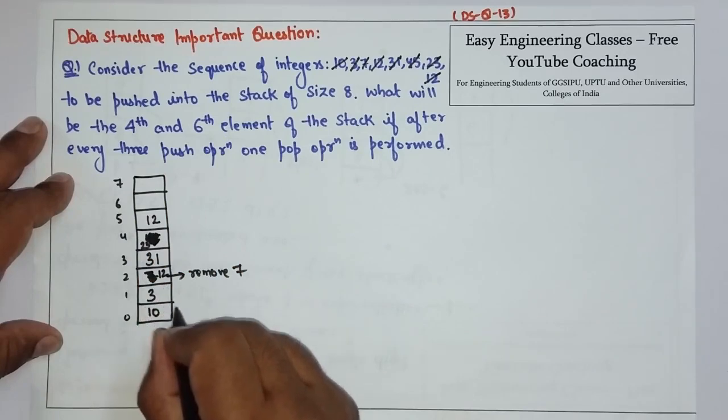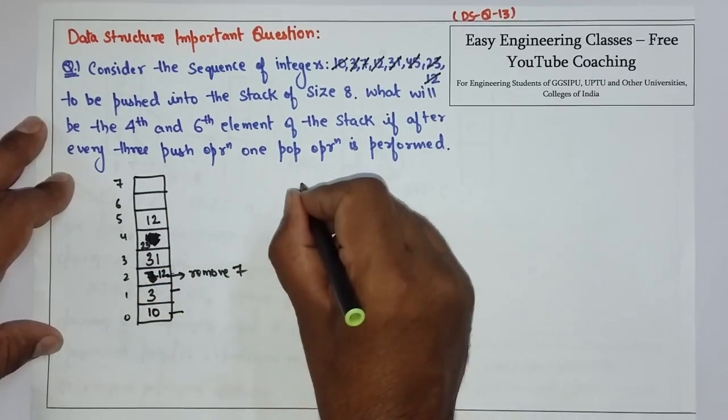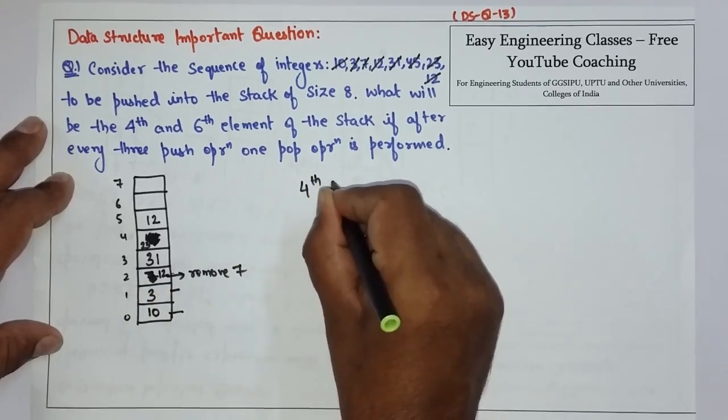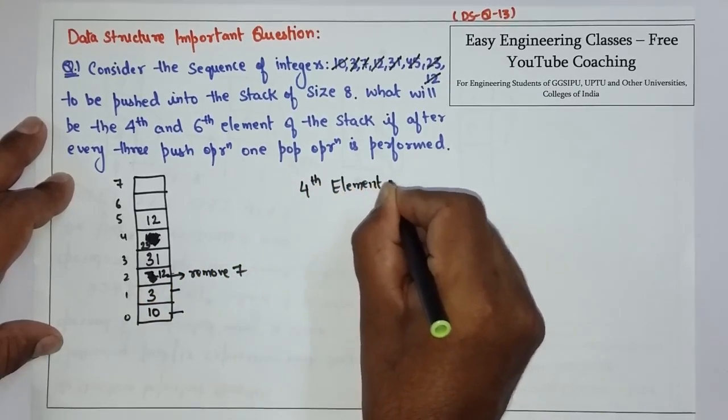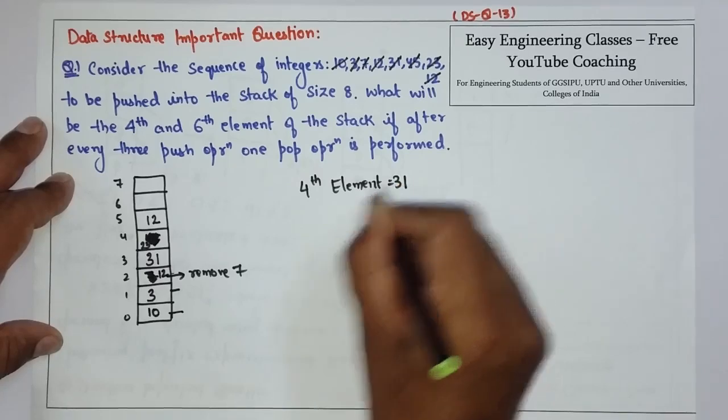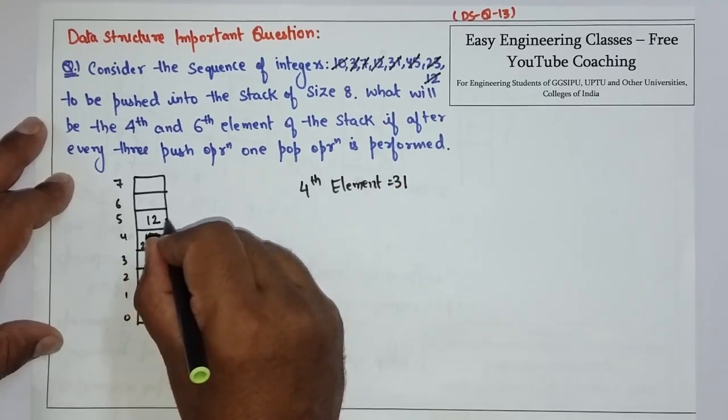So, the 4th element is. This is the 1st element. 2nd, 3rd and 4th. So, the 4th element is 31. And the 6th element is 12.